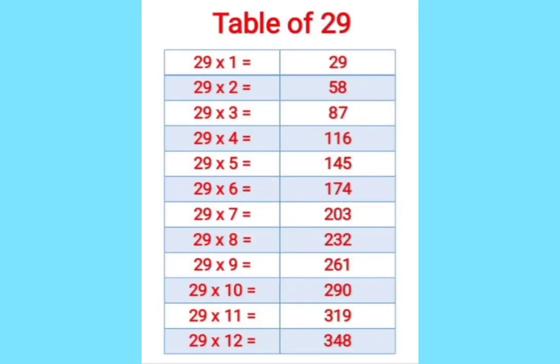29 ones are 29. 29 twos are 58. 29 threes are 87. 29 fours are 116. 29 fives are 145. 29 sixes are 174. 29 sevens are 203. 29 eights are 232. 29 nines are 261. 29 tens are 290. 29 elevens are 319. 29 twelves are 348.